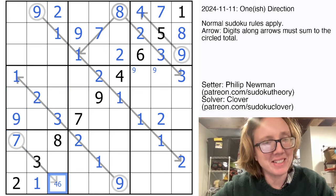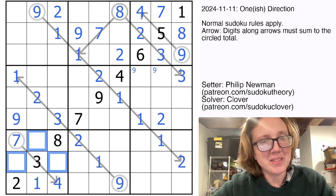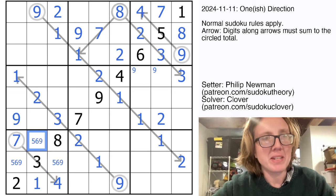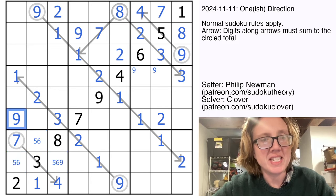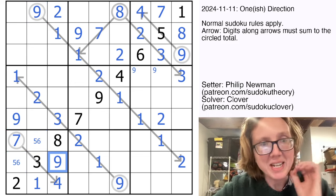making this a seven. And so these cells are going to contain five, six, and nine, and we can eliminate nine from these two because they see nines. So there's a nine.